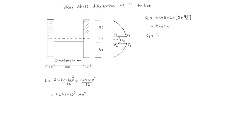And tau1 equals VQ1 by I into b. That is equal to V into 24,750 divided by I value 1.675 into 10 power 6, with b equal to 10 plus 10, which is 20. That equals 0.074 V — that is the shear stress tau1. More precisely, 7.4 into 10 power minus 4, V.